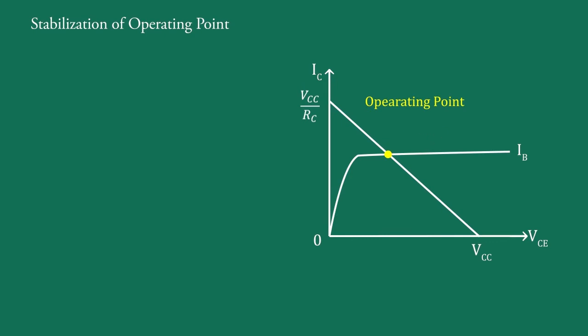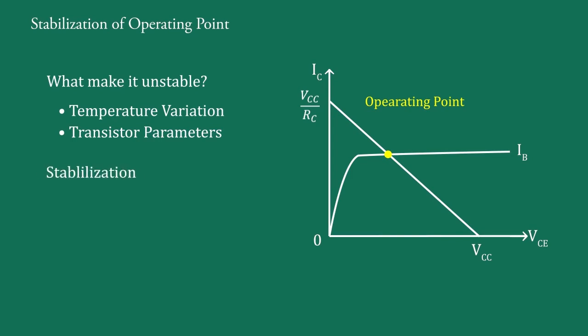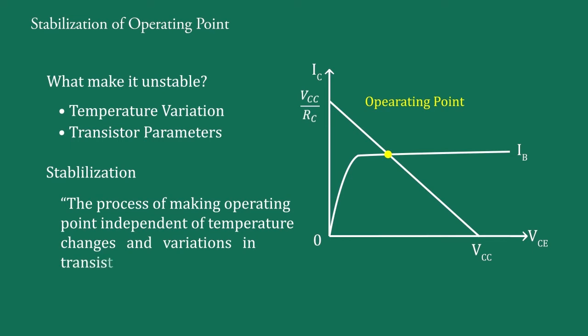For faithful amplification, it is essential that the operating point remains fixed, that is stable. Then what makes it unstable? The answer is temperature variations and transistor parameters. The process of making the operating point independent of temperature changes and variations in transistor parameters is known as stabilization.